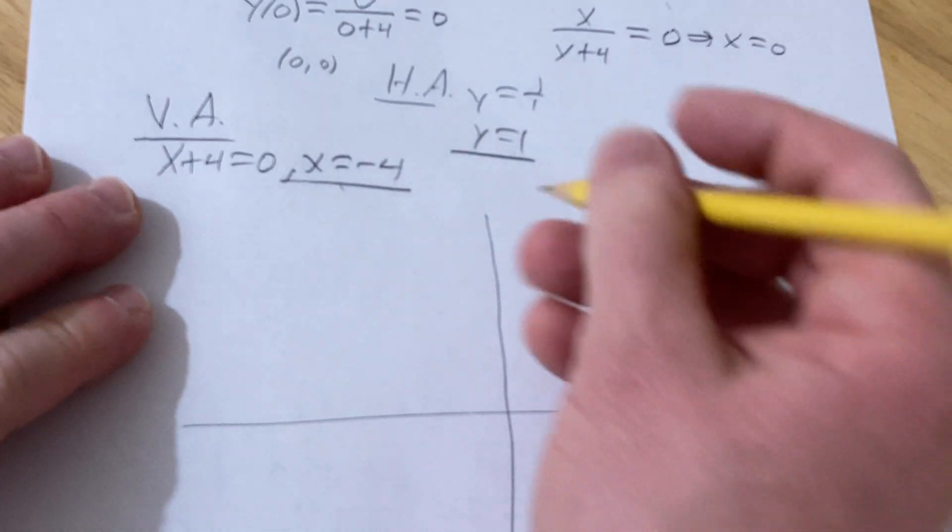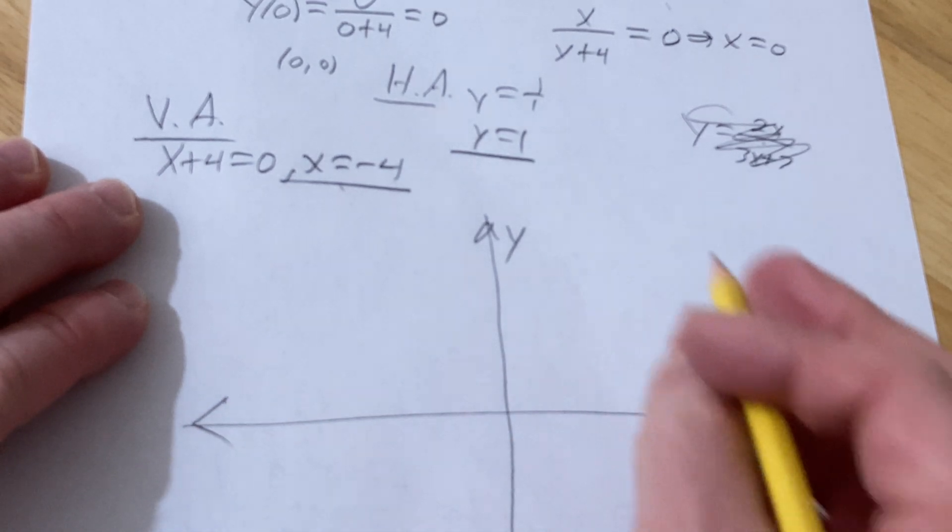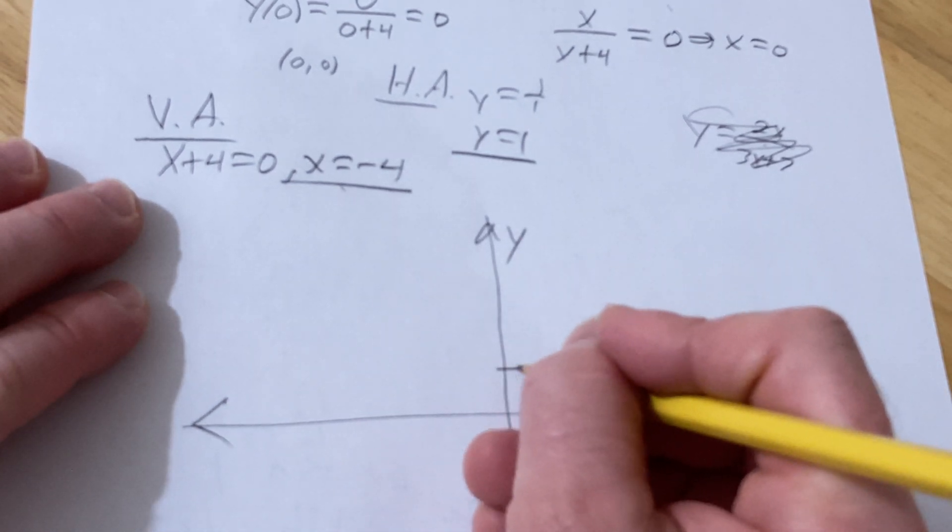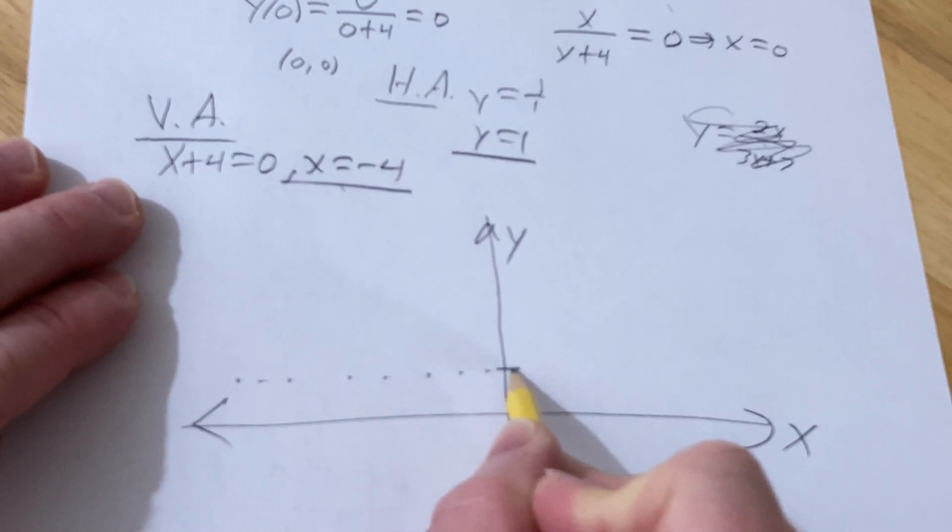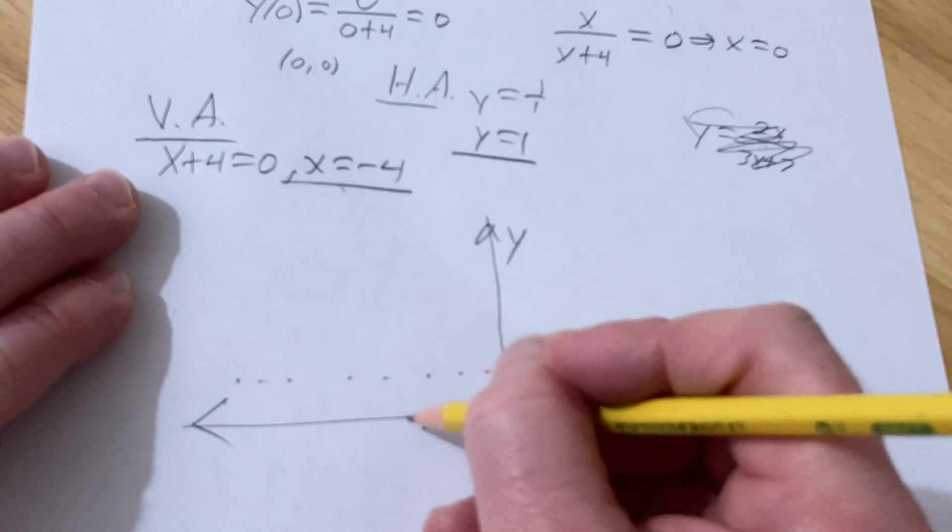So here's the x-axis. Here's the y-axis. So our horizontal asymptote is 1. Our vertical asymptote is negative 4. 1, 2, 3, 4.